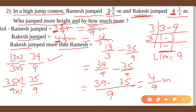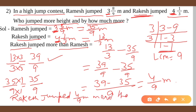So in meters, Rakesh jumped 4 by 9 meters more. Rakesh jumped 4 by 9 meter more than Ramesh. Understood.